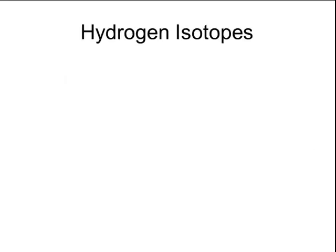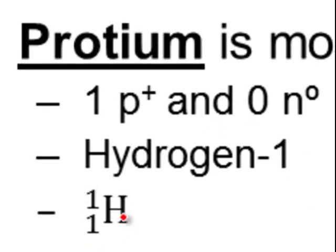Hydrogen actually has three different isotopes. Protium is the most common — 99.9% of all the hydrogen that exists in the universe is in this form. Protium has one proton. You can write it as hydrogen-1, or with the atomic symbol H, with mass number 1 in the top left-hand corner and the number of protons, 1, in the bottom left-hand corner.